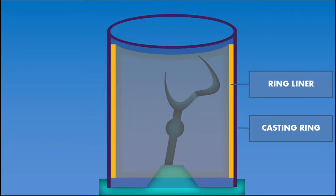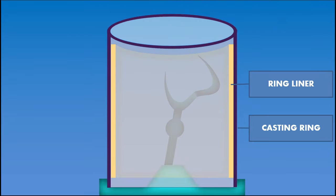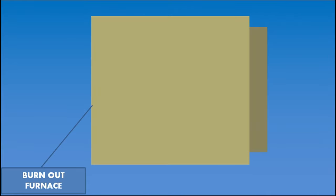Next step is to mix the investment material, which can be a gypsum bonded investment for gold alloys and phosphate bonded investment for base metal alloys. The casting ring is filled. Care should be taken to avoid air entrapment. The wax pattern gets entrapped inside the investment material. The investment is allowed to set completely before the next step.